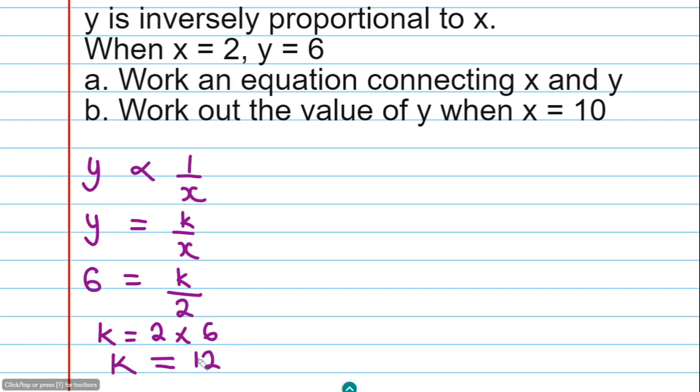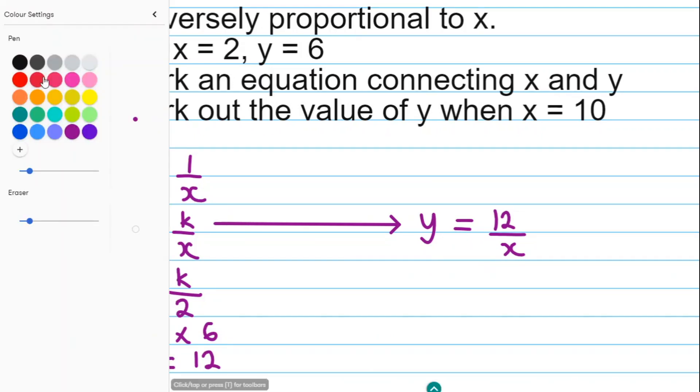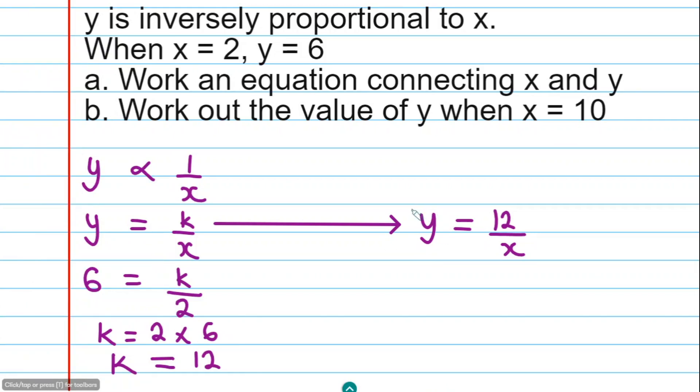Now this value K, I will substitute here in this equation. So what I'm going to do right now is to show an arrow here. So I'm going to substitute K with 12. So this is going to be Y equals K and K is 12 divided by X. Now this is the equation connecting Y and X. Now I'm going to put a color here just for emphasis. So the first part has been done.